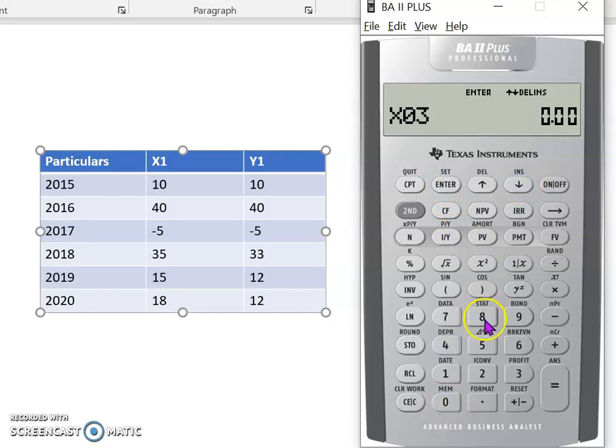So now it asks me for X3. In 2017, the returns were negative 5, so 5 negative, enter, down arrow key. For Y3, it's also negative 5, so negative 5, enter, down.